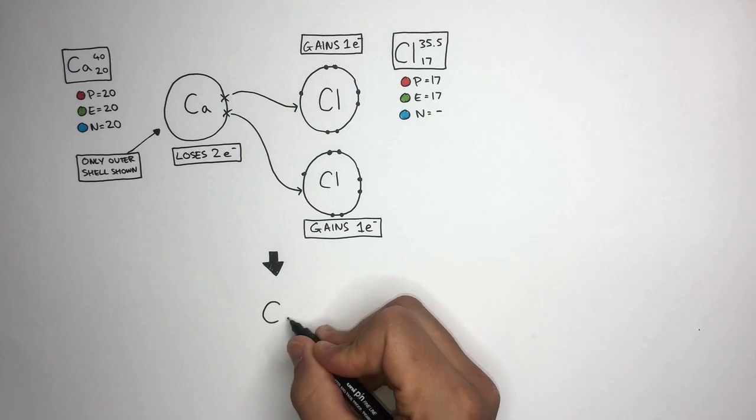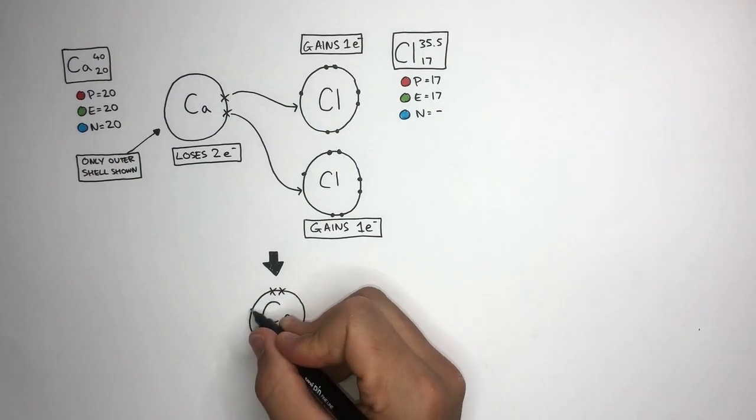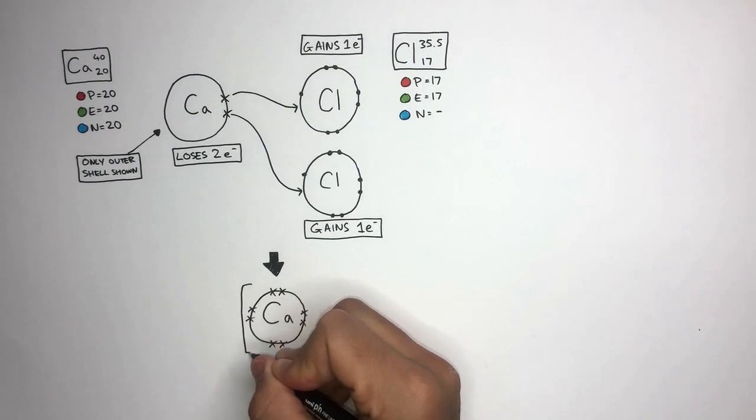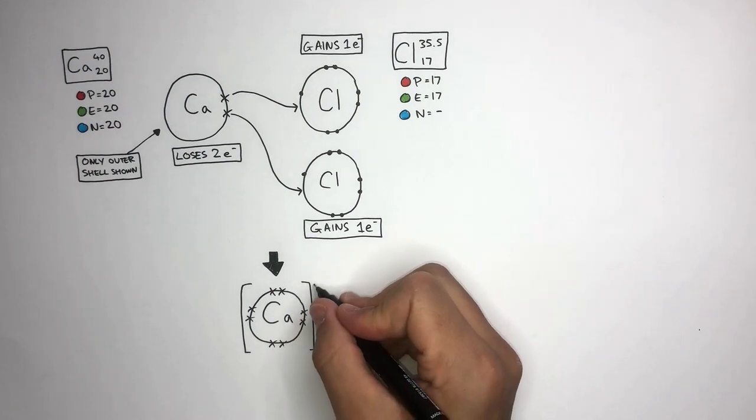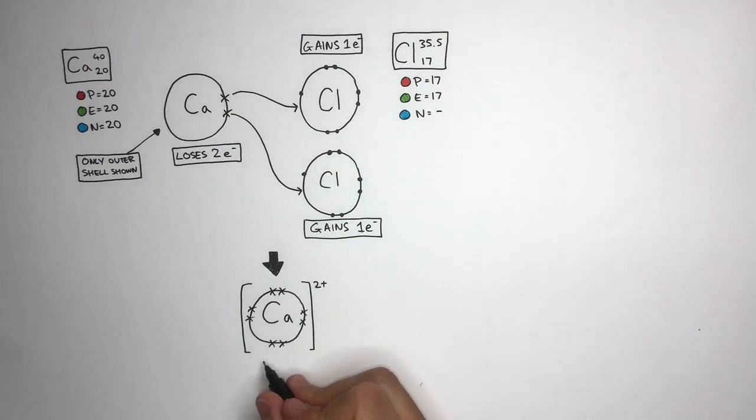A Calcium ion has eight electrons in its outer shell because it has lost two electrons. Therefore, it is now stable, and so it has a charge of two plus. The electronic configuration is 2.8.8. You put square brackets around it, and you write 2 plus in the top right.